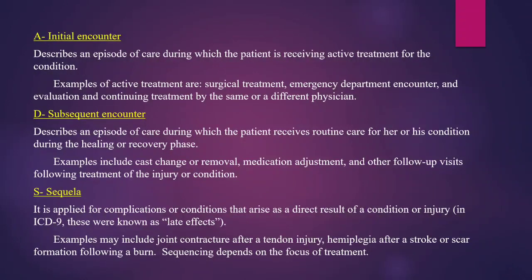For example, a tendon injury has 7 characters. Another example is hemiplegia after stroke — if a patient had a stroke, they would develop hemiplegia on one side as a sequela after the stroke. The first code for hemiplegia after a stroke is explained, using the appropriate sequela character.